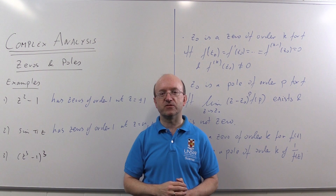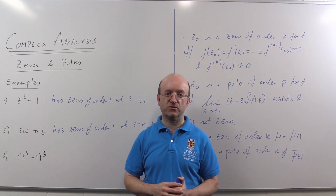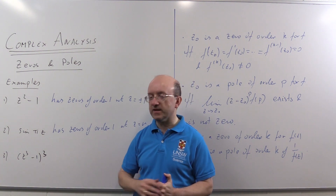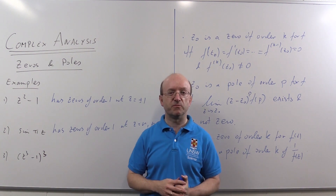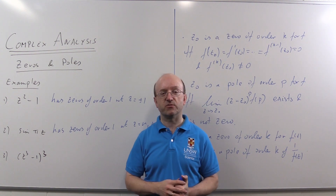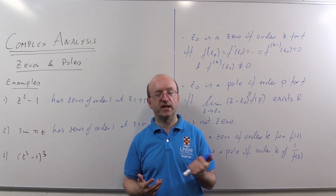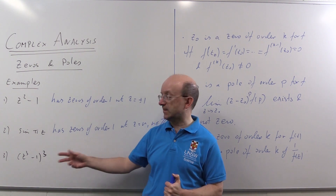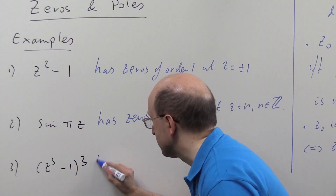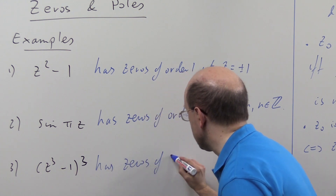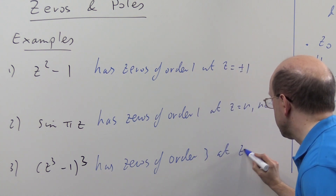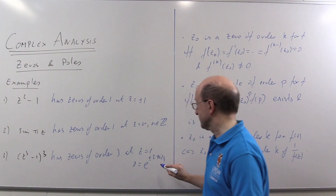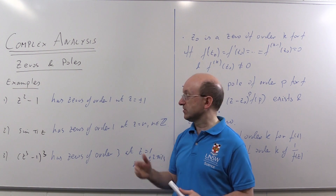In this last example we're looking at (z³ − 1)³. We know z³ − 1 has its zeros at the cube roots of 1: the obvious one is z = 1, and the others are at e^(±2πi/3). When we cube the function, we multiply the order of the zero by 3. In general, if you multiply two functions with zeros of order k and order l at z₀, you get a zero of order k + l. So (z³ − 1)³ has zeros of order 3 at z = 1 and z = e^(±2πi/3).